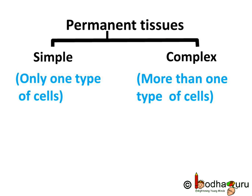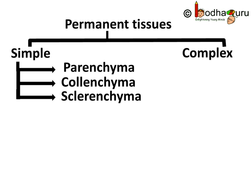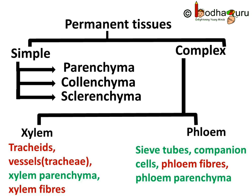So now you know that broadly the permanent tissues in plants are of two types: simple permanent tissue and complex permanent tissue. Simple permanent tissues are made of only one type of cells which look like each other, whereas complex permanent tissues are made of more than one type of cells. These cells coordinate with each other to perform a common function. The simple permanent tissues are of three types: parenchyma, collenchyma, and sclerenchyma. The complex permanent tissue consists of xylem and phloem, which consist of different types of cells.